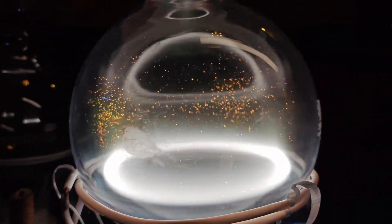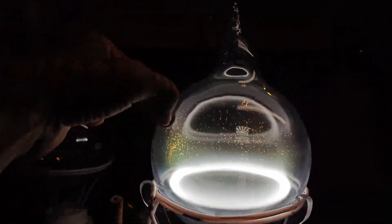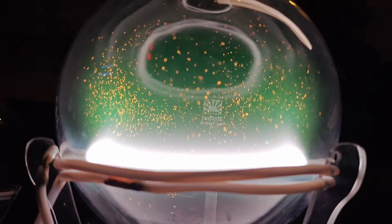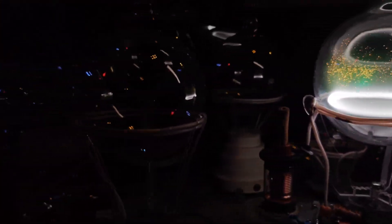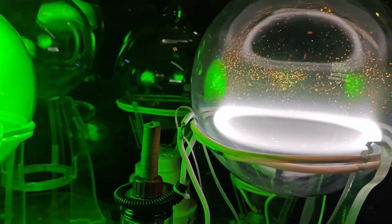Dusty plasma makes kinetic plasma physics visible at the millimeter scale. Concepts like screening, Coulomb interactions and phase transitions, which are normally abstract, appear as moving geometry which you can film in real time. It is a clean model system for studying several physical frameworks simultaneously, with direct links to processes in semiconductor manufacturing, fusion-edge plasmas and even planetary rings.